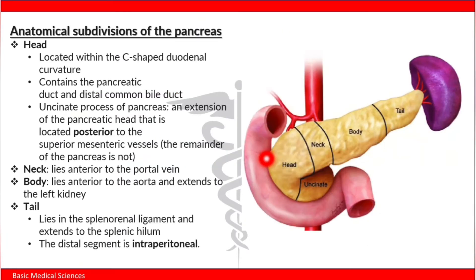The anatomical divisions of the pancreas are the head, neck, body, and the tail. Starting with the head — the head of the pancreas is located within the C-shaped duodenal curvature. The head of the pancreas contains the pancreatic duct and the distal common bile duct.